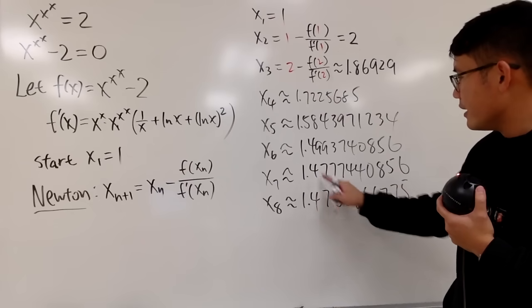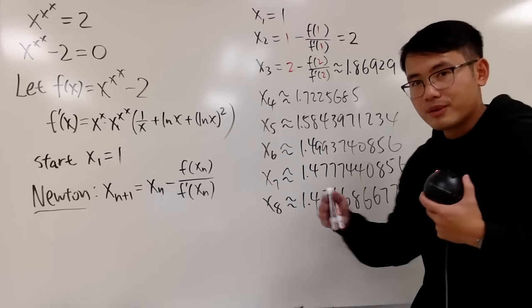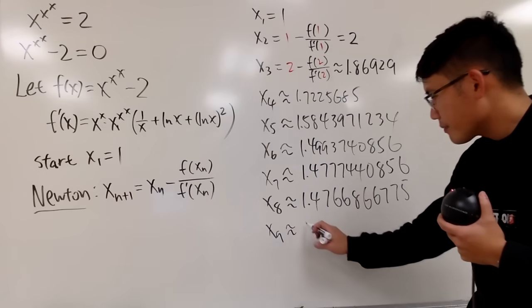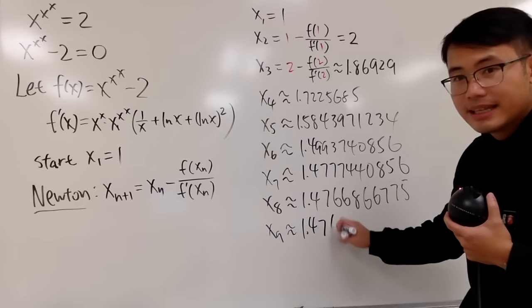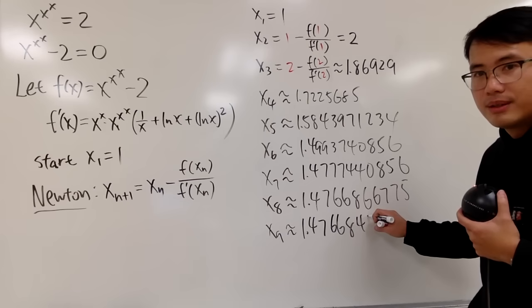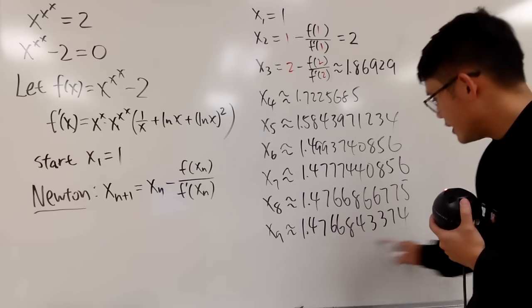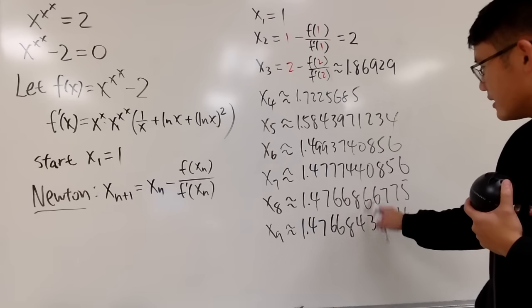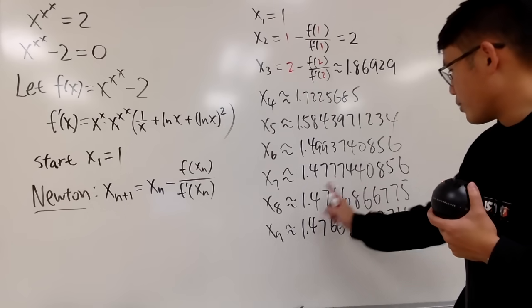1, 4, 7, this matches. So we can kind of see, maybe these are the first three digits of the solution. Let's just do it again. x4 is approximately 1.476684, and then 3, 3, 7, 4, like this. And as you can see, 1 matches, 4 matches, and 7, 6, 6, 8. Ah, this doesn't match. So that's pretty good, because you can see that we have a pretty good approximation already.